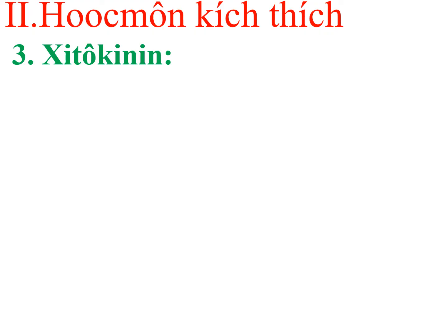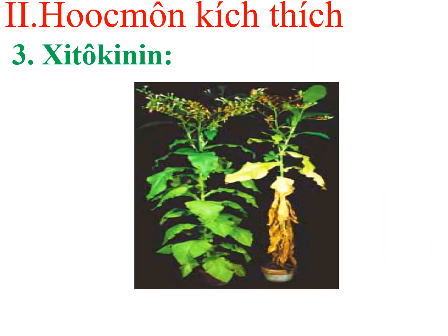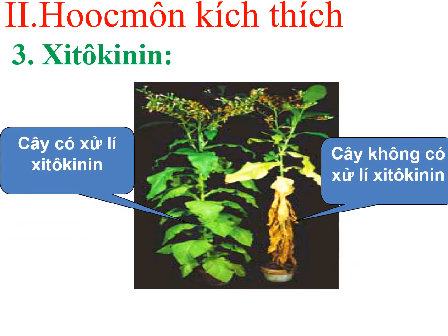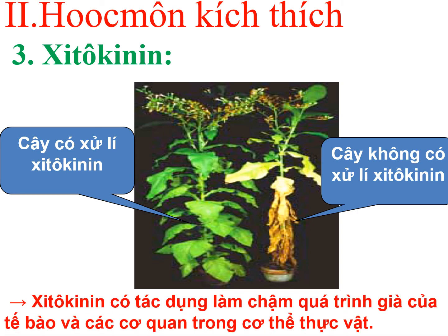Loại hốc môn kích thích thứ 3 là cytokinin. Hai cây thuốc lá: một cây có xử lý cytokinin và một cây không xử lý cytokinin. Đối với cây không xử lý cytokinin thì quá trình già, quá trình lão hóa của tế bào diễn ra nhanh hơn. Điều đó chứng tỏ cytokinin có tác dụng làm chậm quá trình già của tế bào và các cơ quan trong cơ thể thực vật.